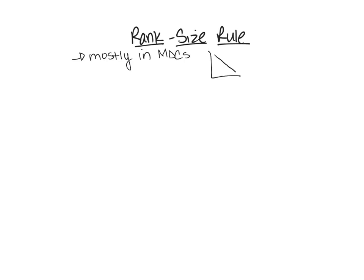Where a primate city graph looks like steps, the rank size rule graph looks like a nice incline — a smooth slope. It won't be perfectly linear when you plot all the city populations, but it follows that general pattern.